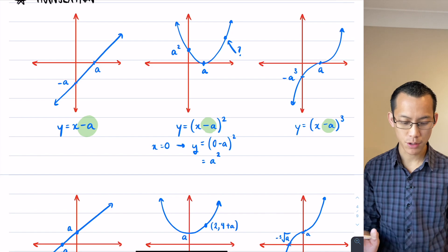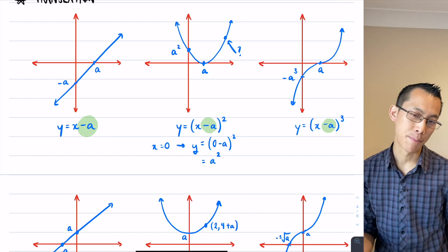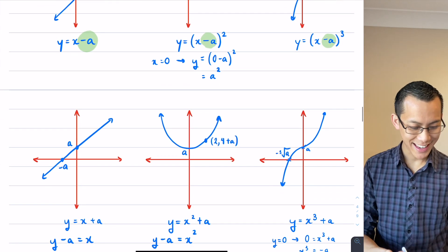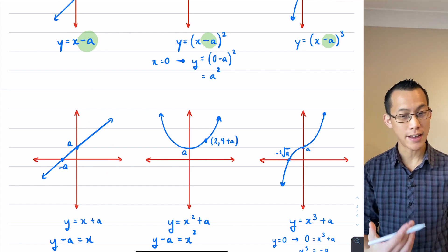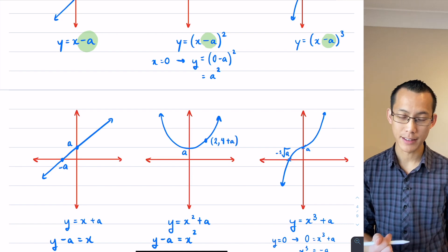So with parabolas, cubics, all the rest of the polynomials, left and right is different to up or down. But it's because here on the left hand side, if you look at the algebra, this A can move left or right and affect the x or y quite independently.